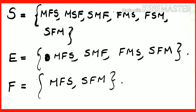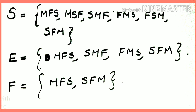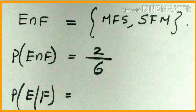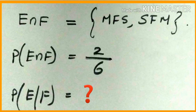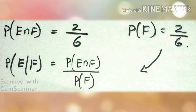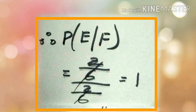So, 2,000. We're going to check it out. This is P of E by F — P of E intersection F by P of F. We're going to check it out. P of E intersection F. We're going to check it out.